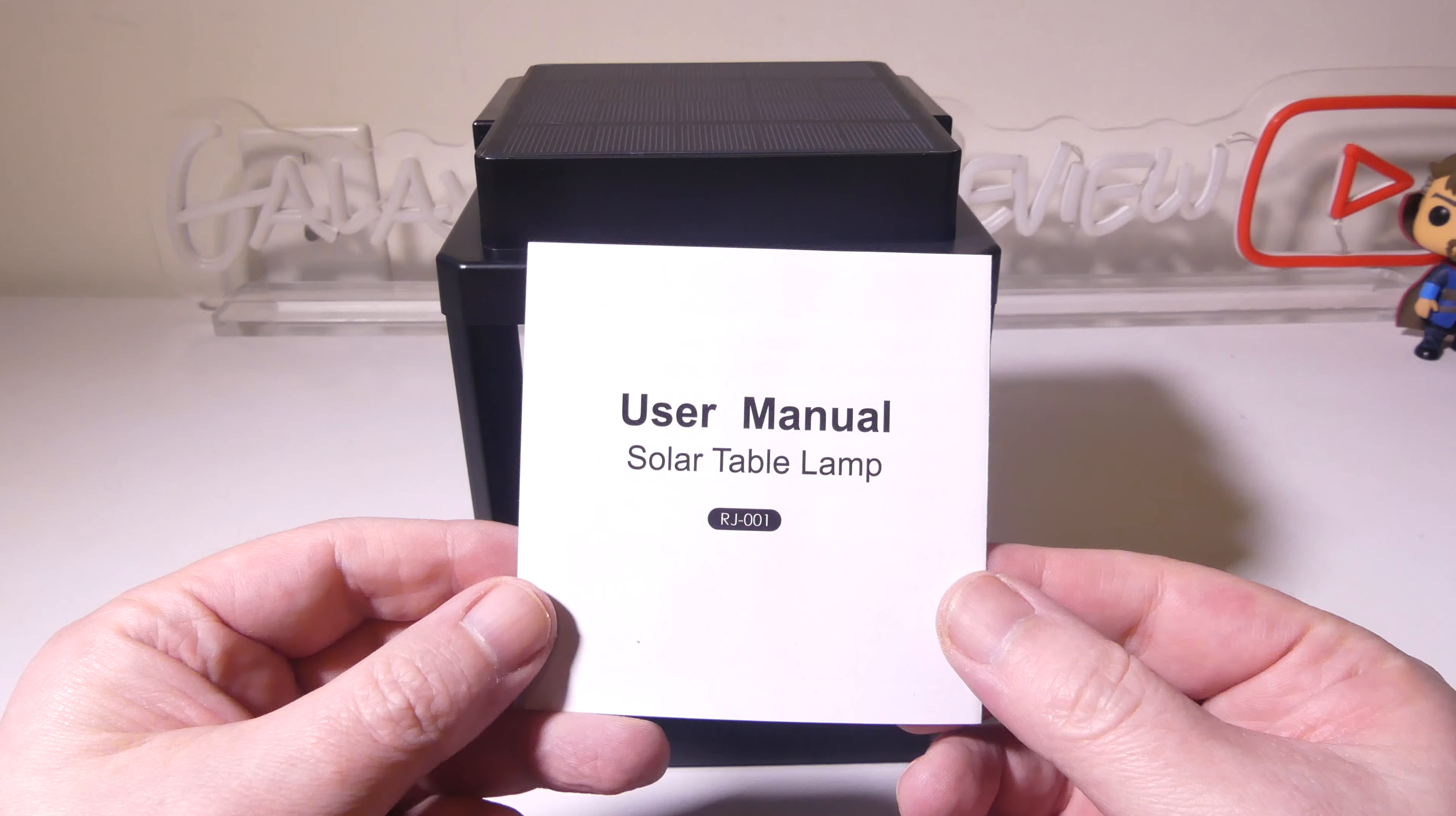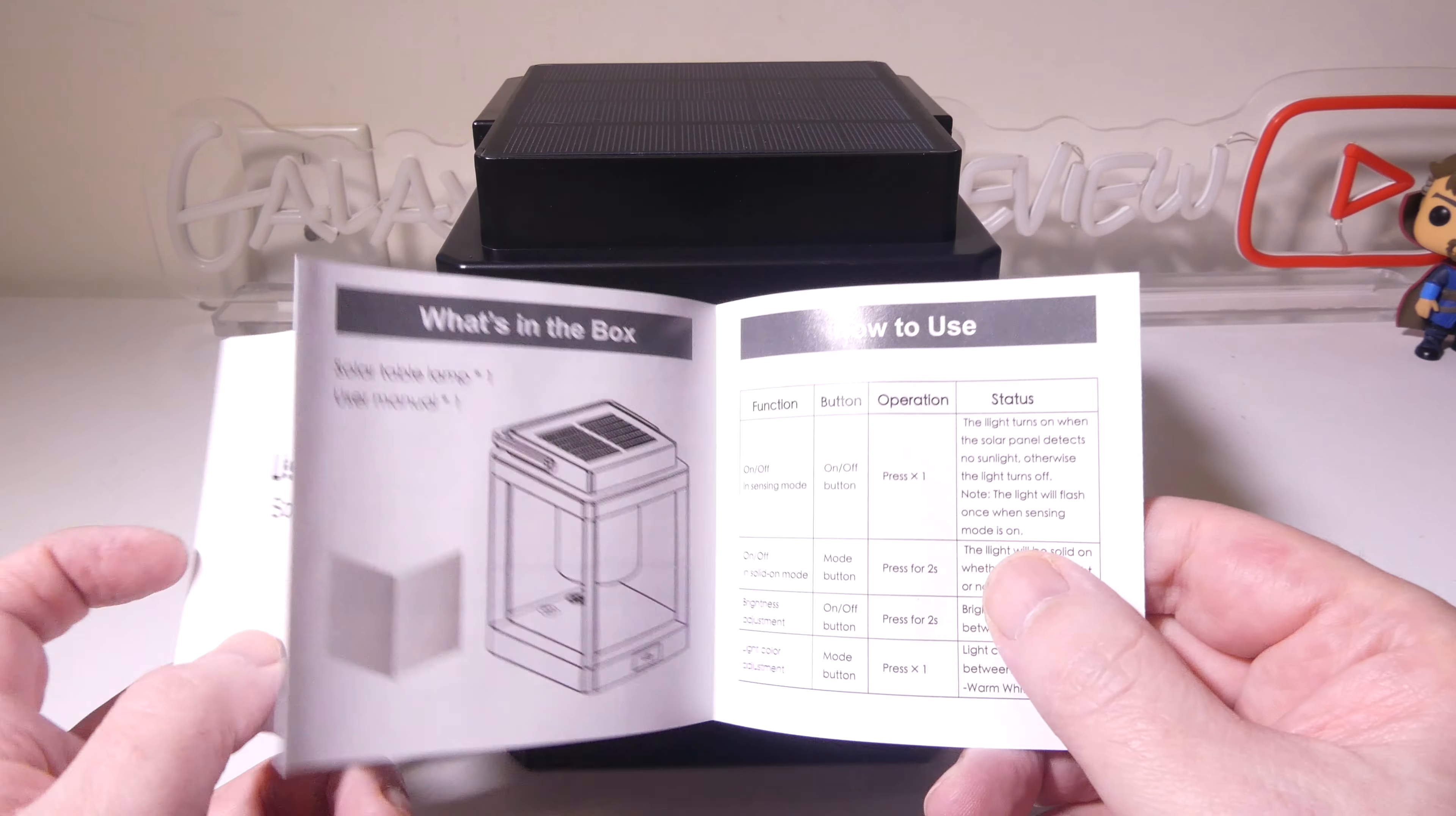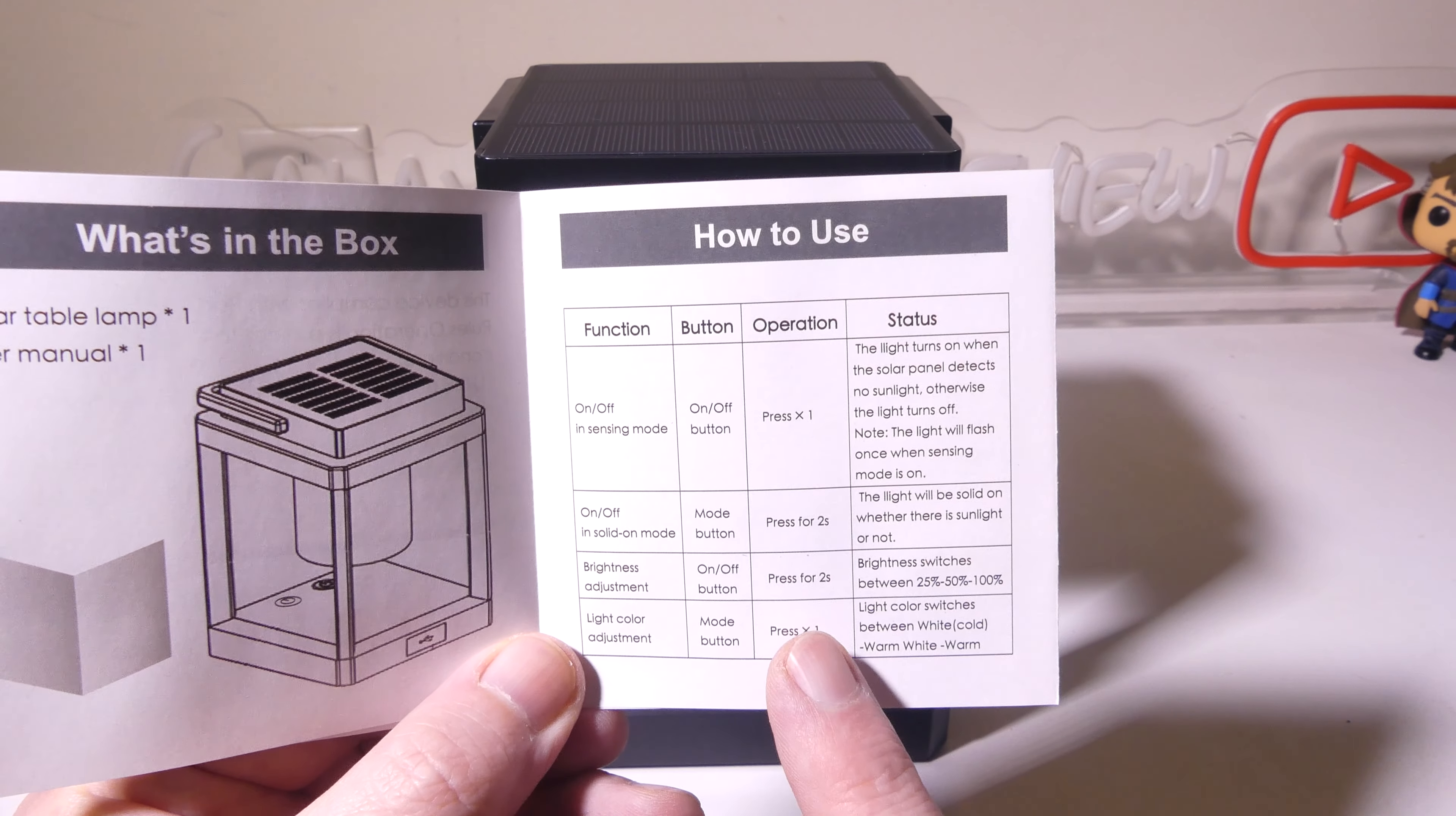Okay, so this is everything that you get. Once you get it out of the box, you're going to get a user manual, and the model number is RJ-001. This is written in English, and it's not microprint, so you're not going to need a magnifying glass to read this.